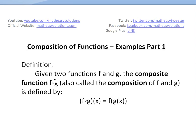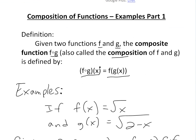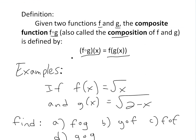In my earlier video I showed the definition. Basically we have two functions f and g. The composite function — f circle g, or f composite g, whatever you want to call it — also called the composition of f and g, is defined by: f circle g of x is equal to f of g of x. So it's a function combined with another function — two functions in one.